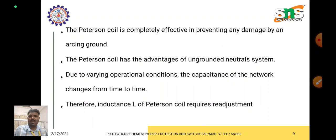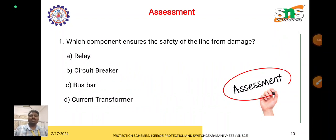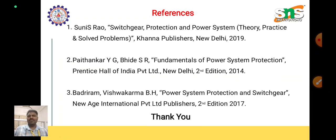The Peterson coil is completely effective in preventing damage from arcing ground faults. It has the advantage of an ungrounded neutral system. However, due to varying operational conditions, the capacitance of the network changes over time, requiring re-adjustment. Now here is an assessment question: which component ensures the safety of the line from damage — the relay, circuit breaker, bus bar, or current transformer? Put your answer in the comment section. Thank you.